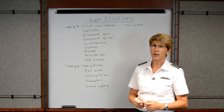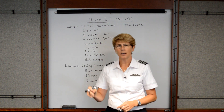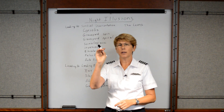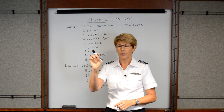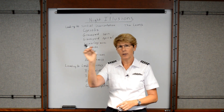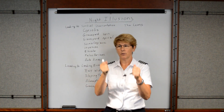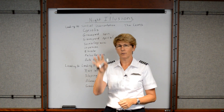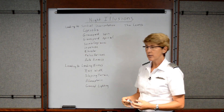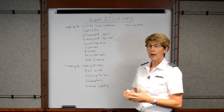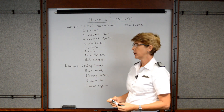Lastly, there is autokinesis. Supposedly, if you stare at a bright light for a period of time at night, the object will appear to start moving around. A disoriented pilot may start to move the aircraft in order to follow along with the light to keep the plane still, when in actuality the plane wasn't moving — it was just the illusion of the light.